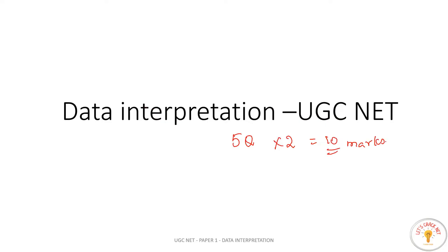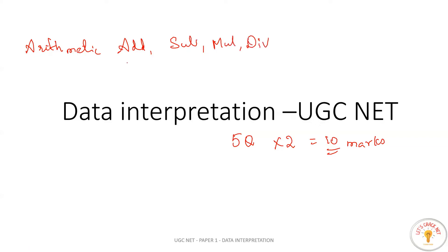For data interpretation, we will find basic ideologies — basic arithmetic operations: addition, subtraction, multiplication, division, and average. If we know these concepts along with percentage and ratio, we will be able to do data interpretation.